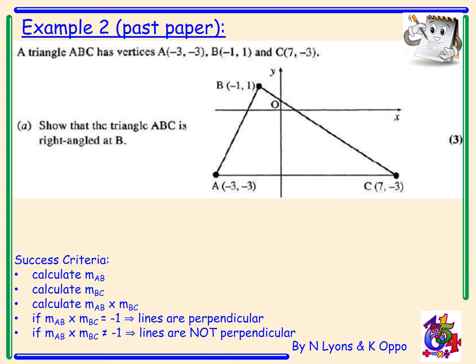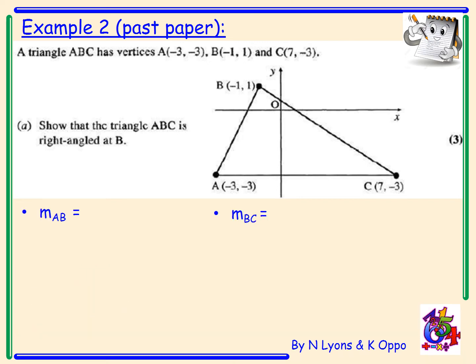So let's have a go now at this worked example. So first of all, looking for the gradient of AB. I've got change in Y over change in X equals 4 over 2. Simplify to 2. I look at the diagram. Is that line AB a positive gradient? Yes, it is. So I'm just double checking, making sure my answer makes sense.